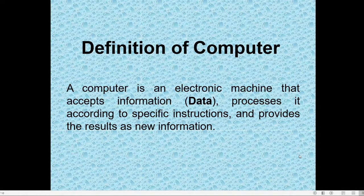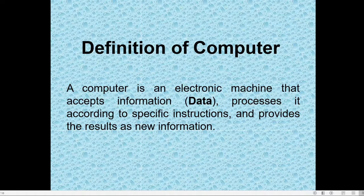Definition of a computer. What do you mean by a computer? A computer is an electronic machine or smart machine that accepts data, processes it according to specific instructions, and provides the results as new information, that is called output. In other words, a computer is an electronic device that takes data as input, processes it, and converts it into meaningful information called output.